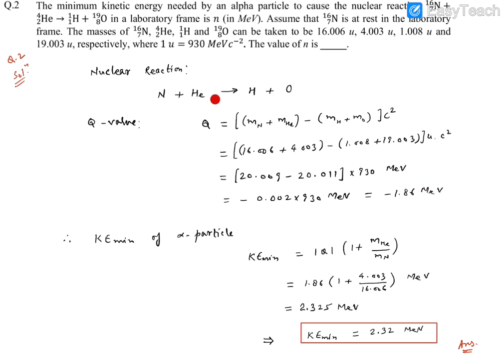That says that this reaction is endothermic because in this case, this came out to negative. That means products have more mass, so some energy has to be supplied in order to compensate this mass growth. So that's an endothermic reaction. Anyway, Q value we have got it.